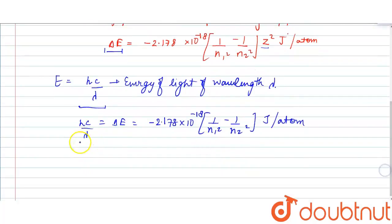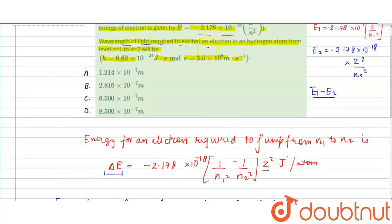The value of constants are given to us. h equals 6.62 times 10 to the minus 34, c is 3 times 10 to the 8, divided by lambda which we have to find, equals minus 2.178 times 10 to the minus 18. Here n1, we have been given that the electron is jumping from n equals 1 to n equals 2.